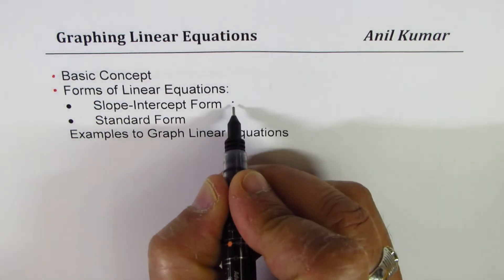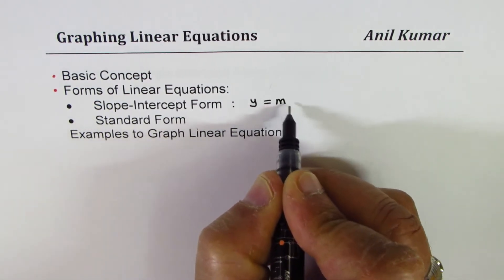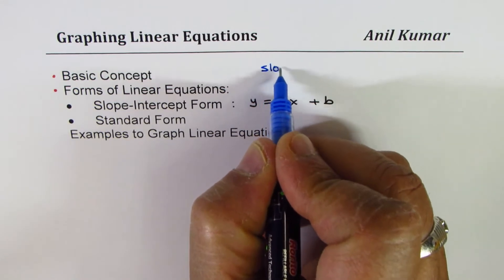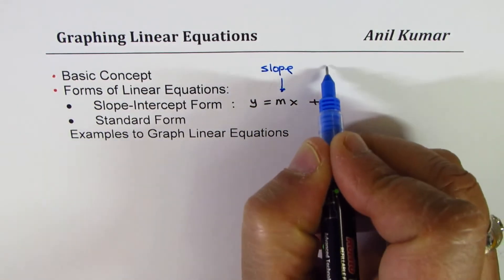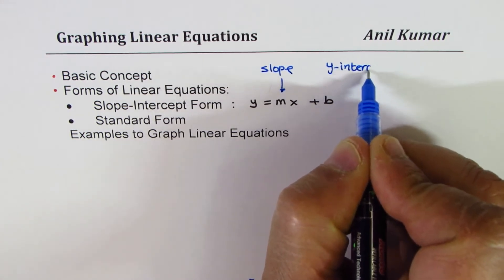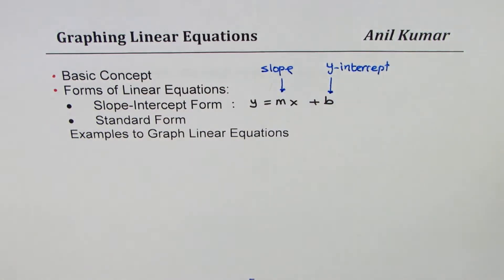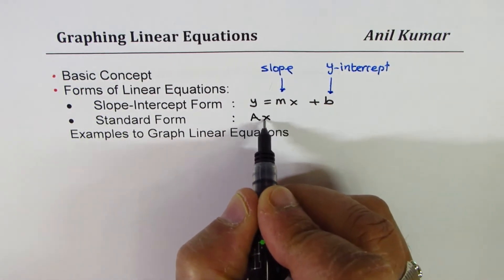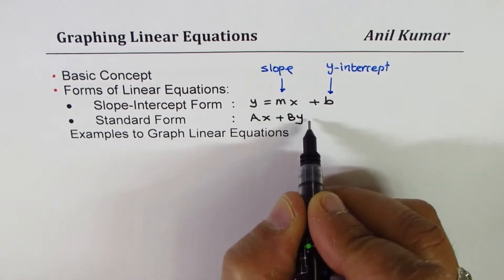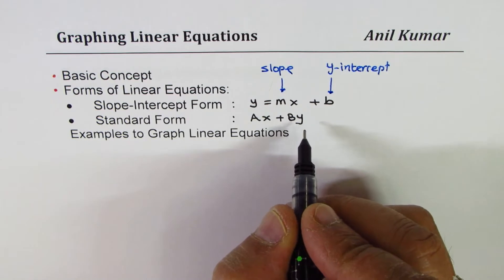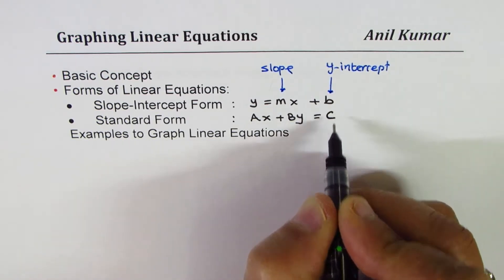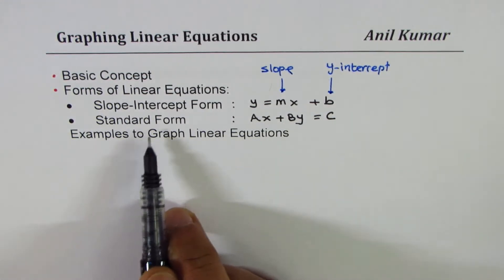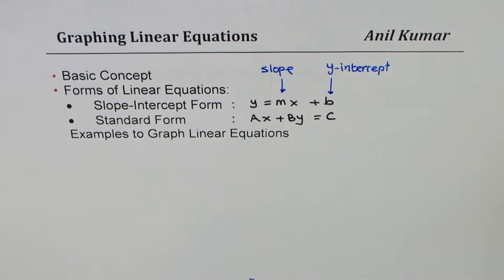Slope-intercept form is y equals mx plus b, where m is the slope of the line and b is the y-intercept. The other form is standard form, which can be written as ax plus by. Normally we write c on the left side, but for graphing we prefer to write c on the right side of the equal sign, so we use ax plus by equals c.